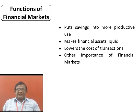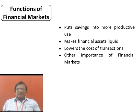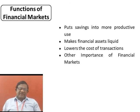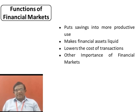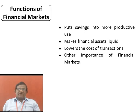The next function of the financial market is makes financial assets liquid. Buyers and sellers can decide to trade their securities anytime. They can use financial markets to sell their securities or make investments as they desire. Another function is lowers the cost of transactions. In financial markets, various types of information regarding securities can be obtained without the need to spend much, thus lowering the cost of transactions.